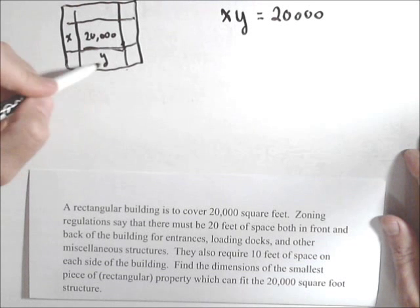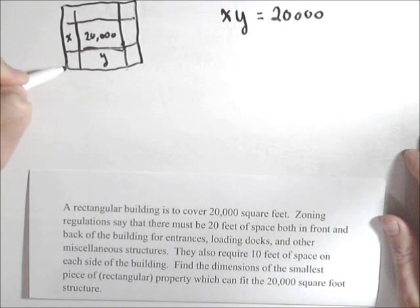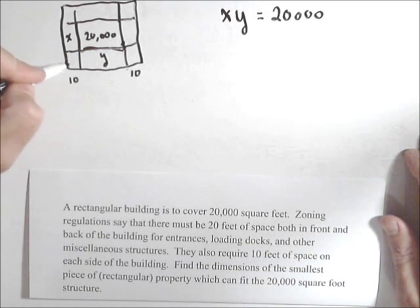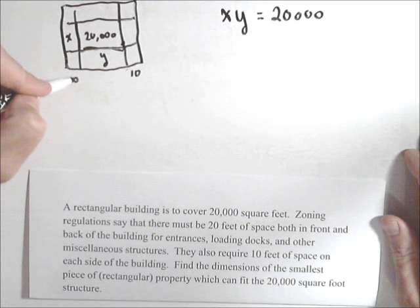So here, from here to here we know it's y, and then we're adding 10 here and 10 here. So this whole length would be y plus 20.